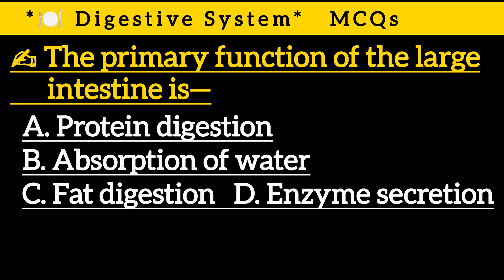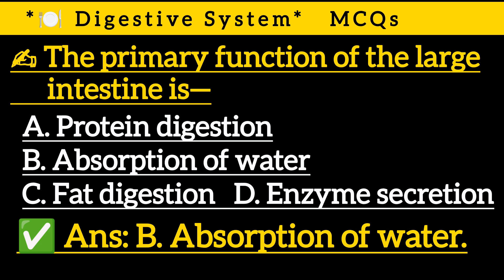Question 6: The primary function of the large intestine is — Option A: Protein digestion, Option B: Absorption of water, Option C: Fat digestion, Option D: Enzyme secretion. Correct answer is Option B: Absorption of water.